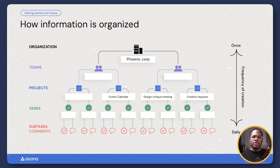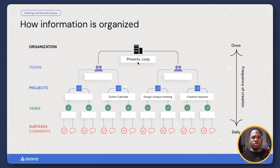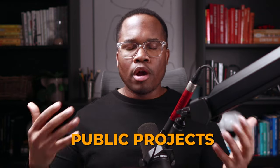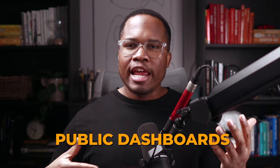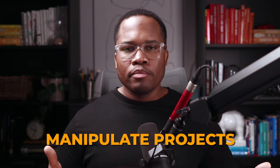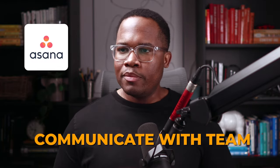I want to take you through the hierarchy so you understand what you're looking at when you get into Asana. At the very top, we have what we call Phoenix Corp — this is just our demo space, representing your organization. If you work at Google, everyone with a google.com email will have full access as a member or admin to the entire space — all public projects, public goals, public dashboards — with various abilities to create things, manipulate projects, and communicate with your team.